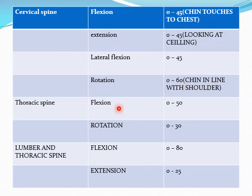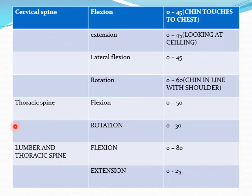Thoracic spine: flexion and rotation. Flexion: 0 to 50 degrees. Rotation: 0 to 30 degrees. Lumbar and thoracic spine: flexion 0 to 80 degrees. Extension: 0 to 25 degrees.